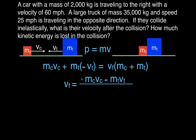Solving for the final velocity: it equals the mass of the car times its velocity minus the mass of the truck times its velocity — because the truck travels in the opposite direction, that term is negative — all divided by the sum of both masses. That's really the hardest part; now we just plug in the values.